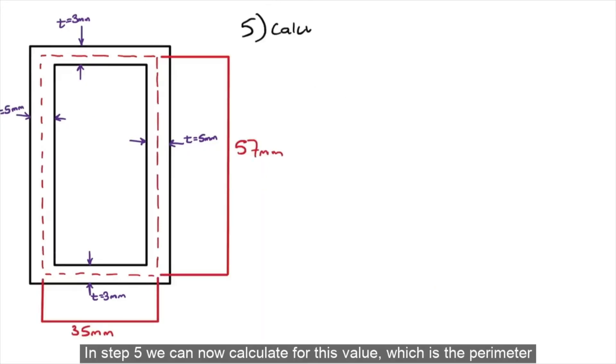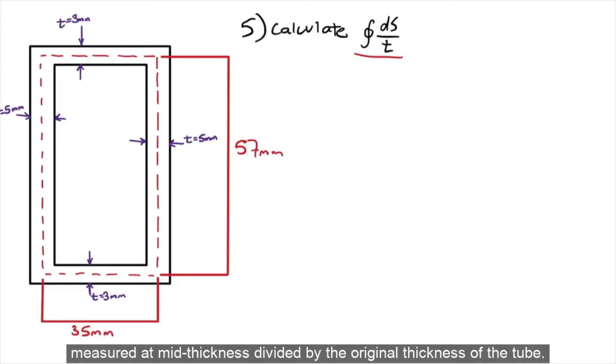In step 5, we can now calculate for this value, which is the perimeter measured at mid thickness divided by the original thickness of the tube.